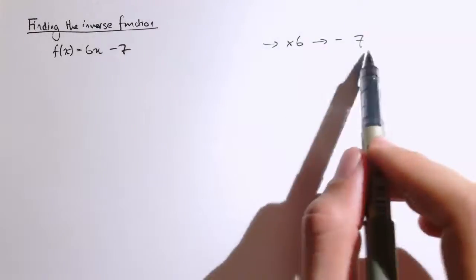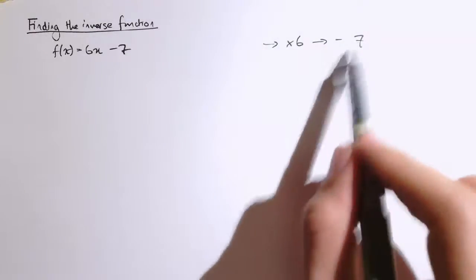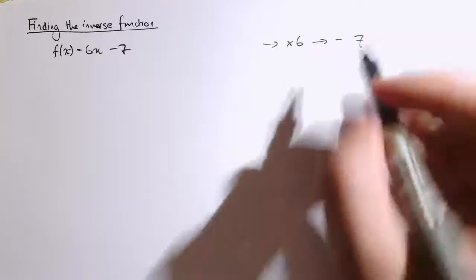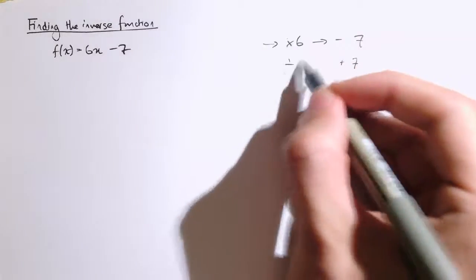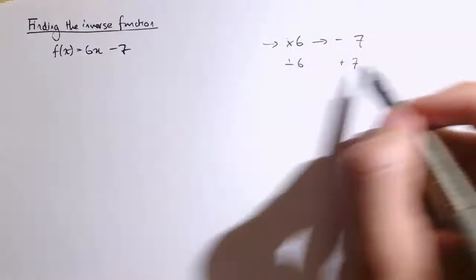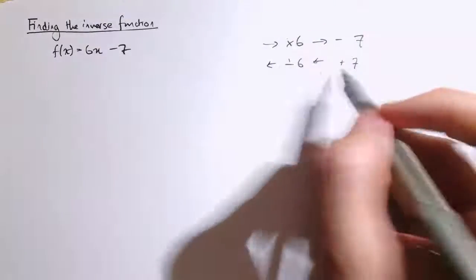So here, this minus 7 operation is undone first, so we're going to change that to plus 7. And then times 6 becomes divided by 6 when we work the other way back through the function.